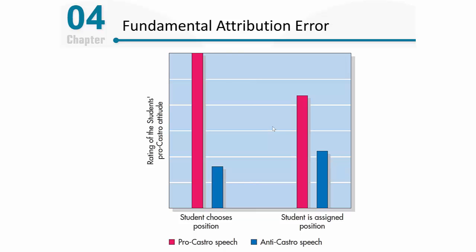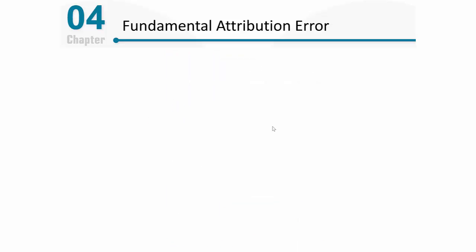We call it the fundamental attribution error because it is so pervasive — it occurs in so many situations. This is just one of the first times it was really captured in an experiment.